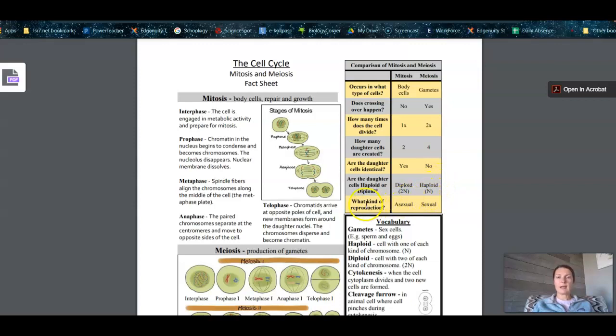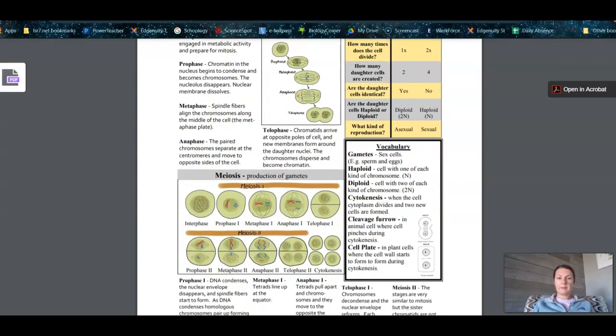And then what kind of reproduction? This is asexual for mitosis and then sexual for meiosis.